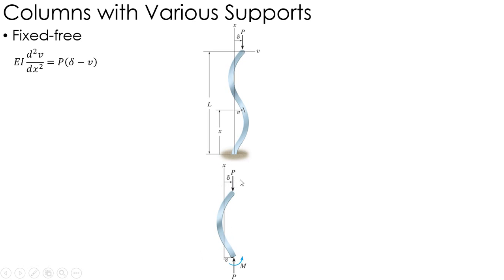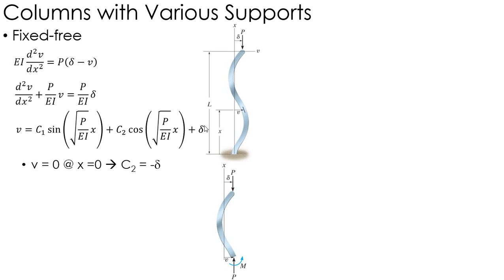I'm going to find the moment and set it equal to the second derivative of the deflection. But recognize now that since it's free to move at the top, that can move some amount Delta, and then my arbitrary distance V here. So now it's P times Delta minus V, so my differential equation looks a little bit different. It's not equal to zero; it's equal to this constant here, P over EI times Delta. So my solution looks a little different. I have this plus Delta at the end that I need to worry about.